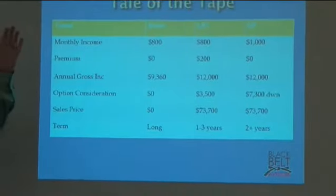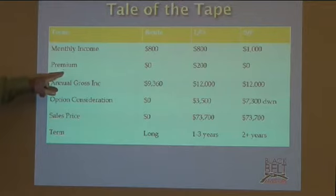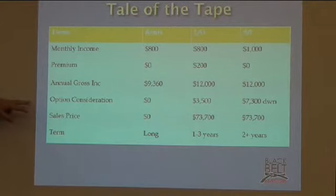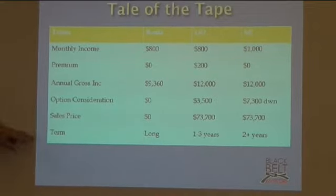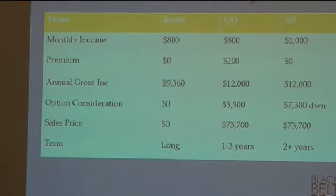So let's take a look at the tail of the tape. Let's measure up. Okay, so we've got the terms on the left hand side. I'll just run through them real quick. Monthly income, premium, annual gross income, option consideration, sales price, and term. Then we've got the rentals, lease options, and seller financing. What we don't have up here is flips. We know about flips. We buy them, we fix them, we flip them, we make money. Okay, so on the rental side, if we go on monthly income, everybody's making $800 a month, remember, in the same subdivision. That's great. Same thing with lease option. We're making $800 a month. But on the rental side there's no premium because you're into it for the long term. Annual gross income, you're making about $9,300 a year. Option consideration, there isn't one. There's no deposits you're taking except for maybe a security deposit and that's going to be given back anyways. There's no sales price because you're banking this property. There's absolutely nothing wrong with number one because that's where we all want to be, is on the rental side.